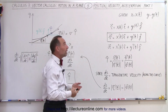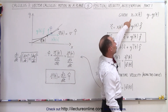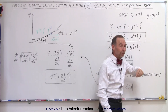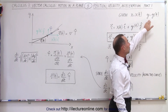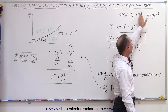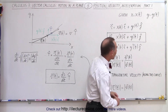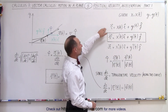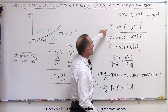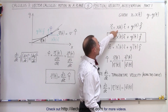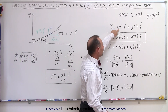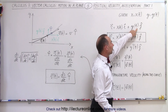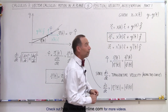Usually we have the x position of a particle expressed in terms of the parametric variable t for time, and y, both in the x direction and in the y direction as well, such that the position vector can be expressed as some function in the x direction that depends on time and some function that depends on time in the y direction as well.